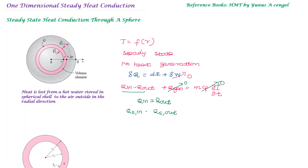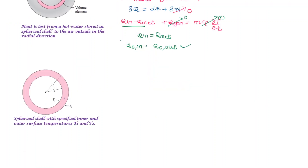Next, we apply Fourier's law of heat conduction: Q equals minus k·A·(dT/dr). For a sphere, the inside surface area is A1 = 4πr1² and the outside surface area is A2 = 4πr2². There is an area variation with radius. We calculate the rate of heat transfer by considering a small element with total spherical area.